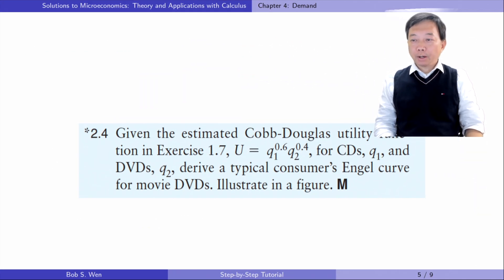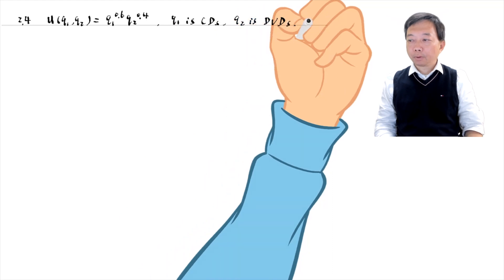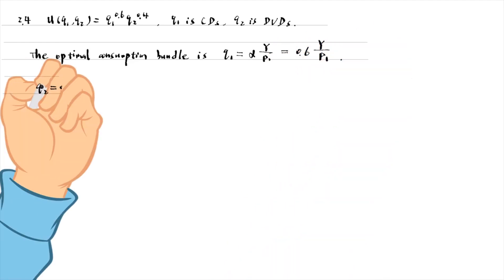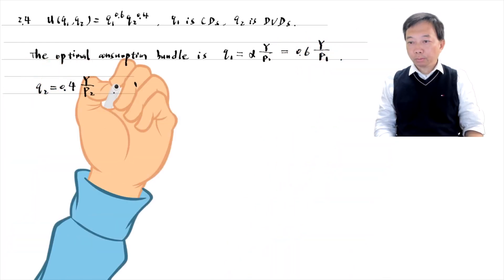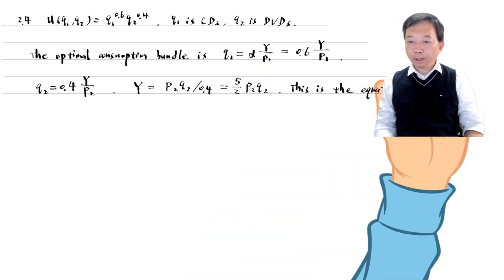Let's find answers to exercise 2.4. Given the estimated Cobb-Douglas utility function in exercise 1.7, derive a typical consumer's Engel curve for movie DVDs and illustrate in a figure. From the Cobb-Douglas utility function, we can write the demand function directly. For DVDs Q2, we can write income as a function of P2 and Q2. This is the equation for the Engel curve for DVDs.